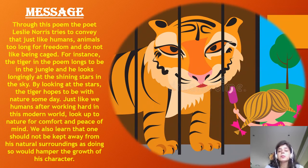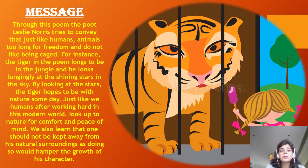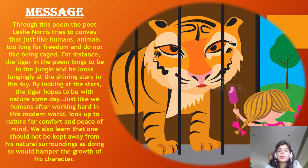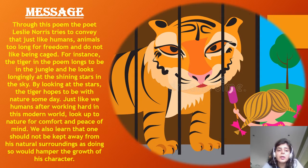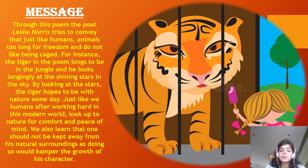Now coming to the message — what does the poet want to give? Through this poem, Leslie Norris tries to convey that just like humans, animals do long for freedom and do not like being caged. The tiger in this poem longs to be in the jungle and looks longingly at the shining stars in the sky. By looking at the stars, the tiger hopes to be with nature some day, just like we humans, after working hard in the modern world, look up to nature for comfort and peace of mind. We also learn that one should not be kept away from natural surroundings, as doing so would hamper the growth of character.